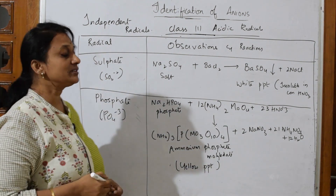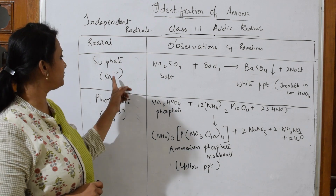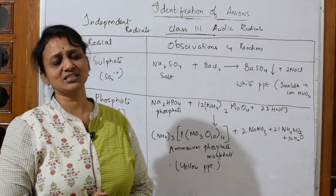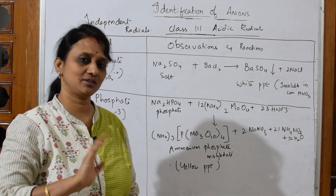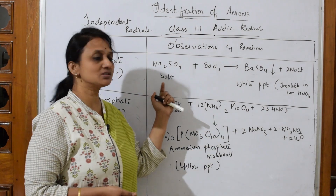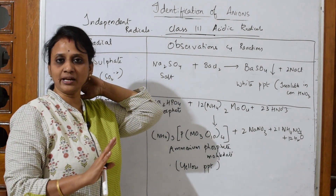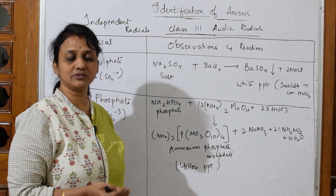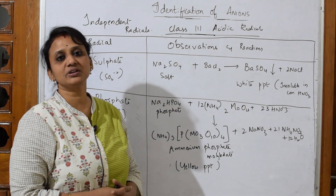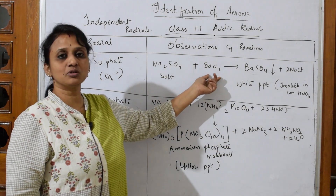Let's start with the first anion in the independent radicals category — sulfate, which is SO₄²⁻. The simplest test: if you get sulfate, you're lucky. Let's assume the salt given is sodium sulfate. If the anion is not responding to dilute or concentrated sulfuric acid, come directly to the sulfate test. For the confirmatory test, take some barium chloride and add it directly to the salt solution.